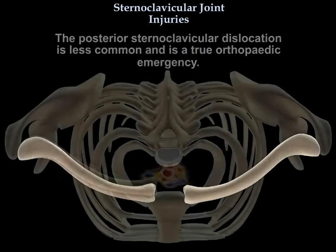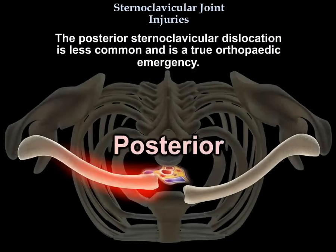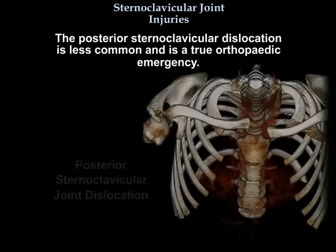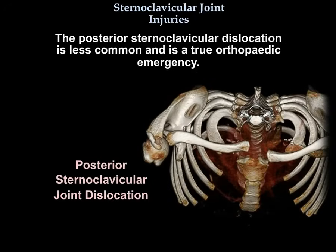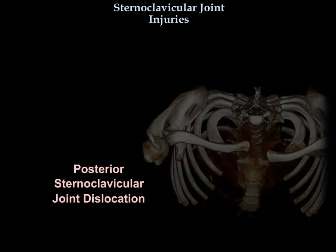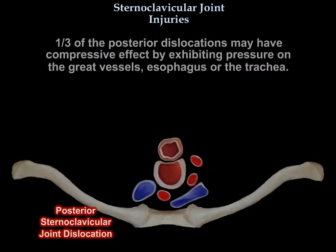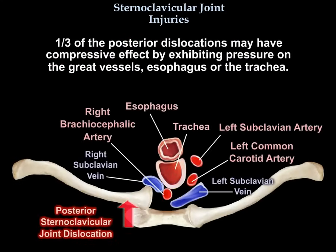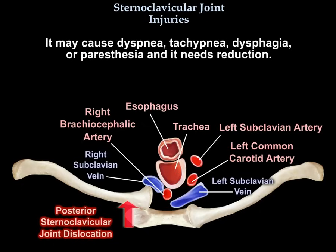The posterior sternoclavicular dislocation is less common and is a true orthopedic emergency. One third of them may have a compressive effect, exhibiting pressure on the great vessels, the esophagus, or the trachea. It may cause dyspnea, tachypnea, dysphagia, and paresthesia, and it needs reduction.